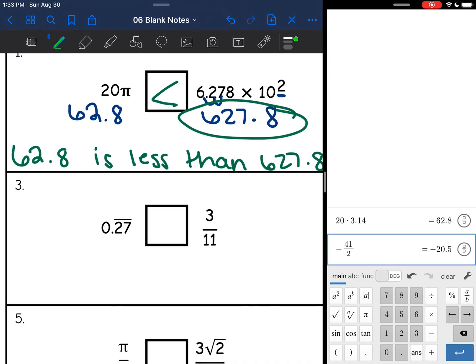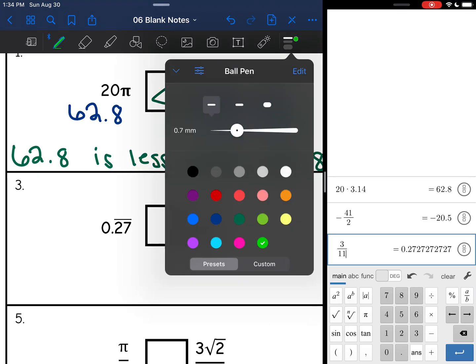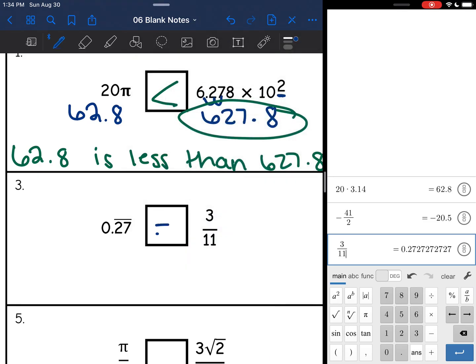Number 3. I have 0.27 repeating. And then let's see what 3 divided by 11 is. It is obviously 0.27 repeating as well. So these are going to be equal here.